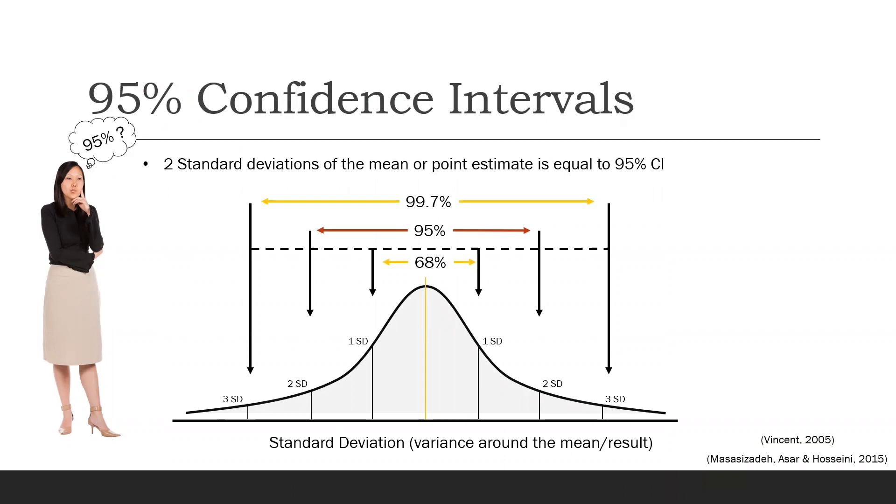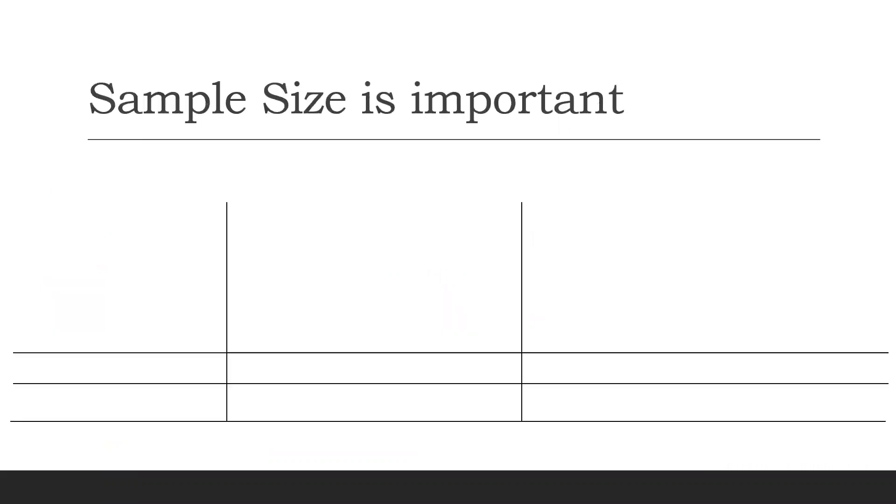Two standard deviations from the mean represents 95% of the collected data under the curve. The deviations upper and lower values represent the confidence intervals upper and lower values. So one concept that confidence intervals are great for is to be visual guides for the variance around the point estimate or the mean.